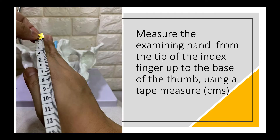Next, measure the examining hand from the tip of the index finger up to the base of the thumb using a tape measure. In this picture, the length from the tip of the index finger up to the base of the thumb is about 11.5 centimeters.